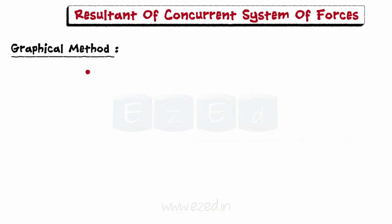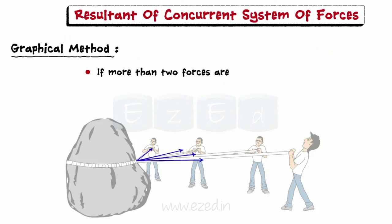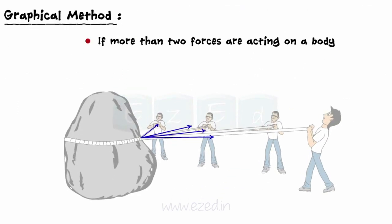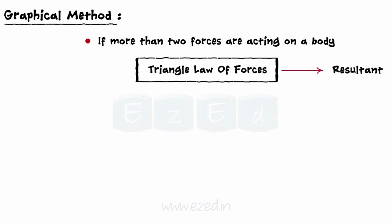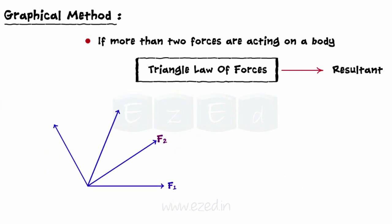Now let's learn to find the resultant when more than two forces are acting on a body. In such a situation, two forces at a time can be combined by the triangle law of forces and finally the resultant of all the forces acting on the body can be obtained. In the figure, a system of concurrent forces consisting of four forces F1, F2, F3, and F4 acting on a body is shown.